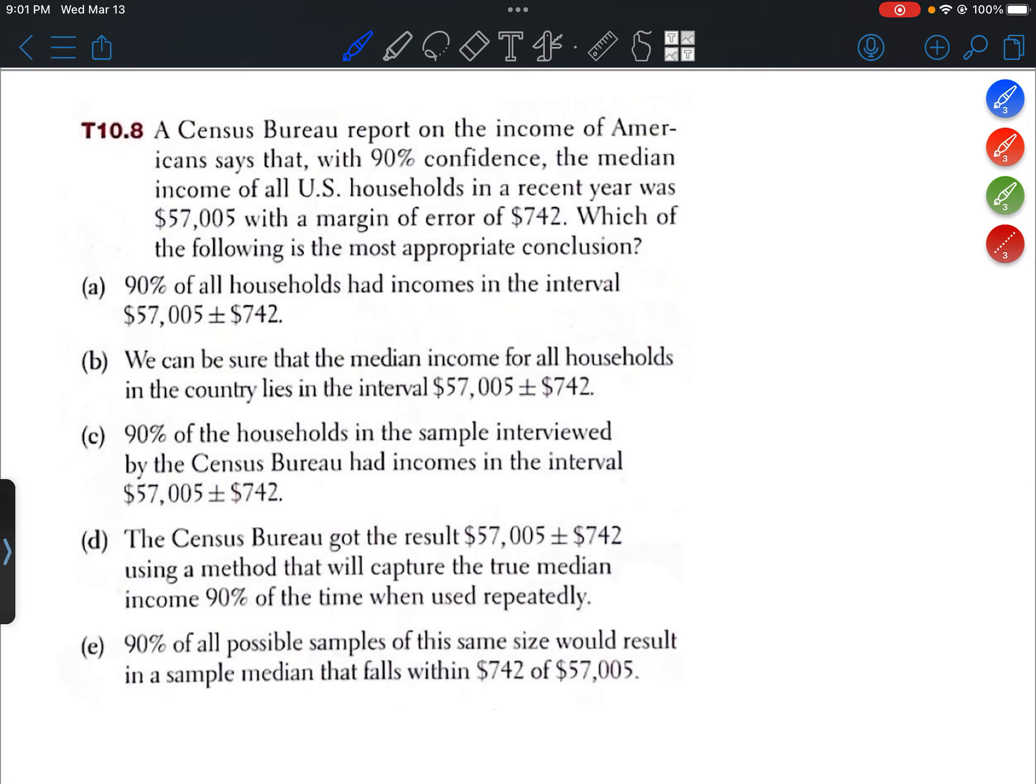T-10.8. A Census Bureau report on the income of Americans says that with 90% confidence, the median income of all U.S. households in a recent year was $57,005, with a margin of error of $742. Which of the following is the most appropriate conclusion?